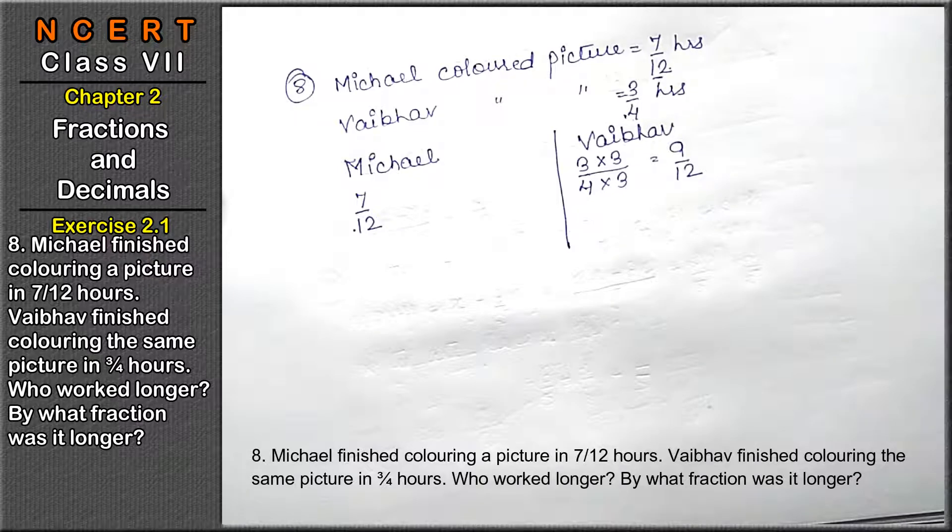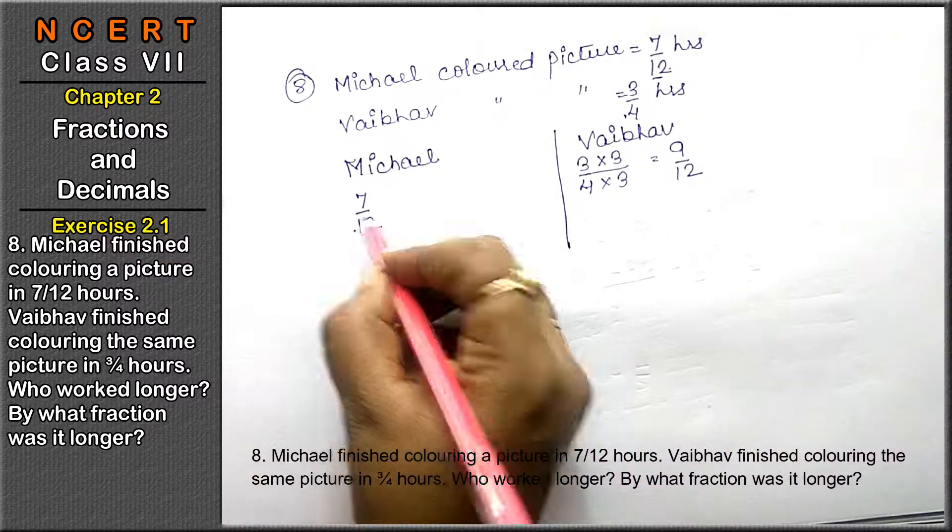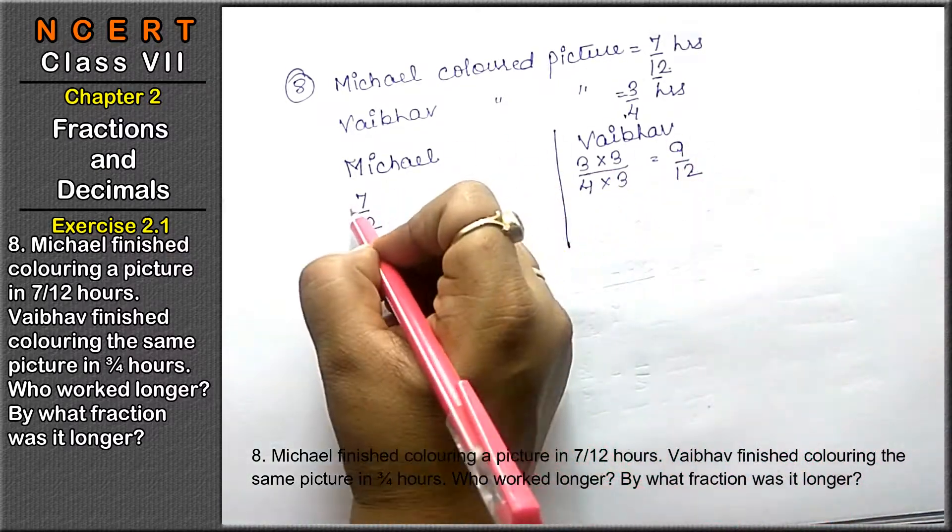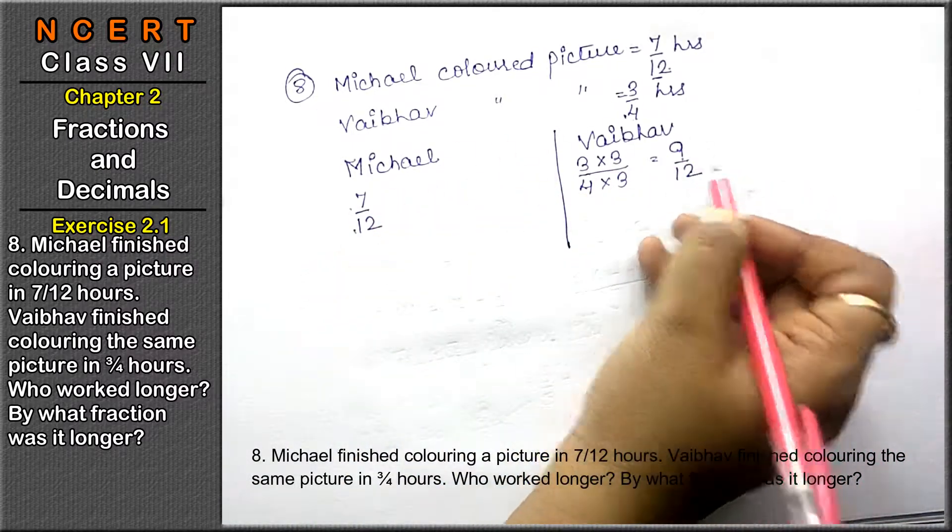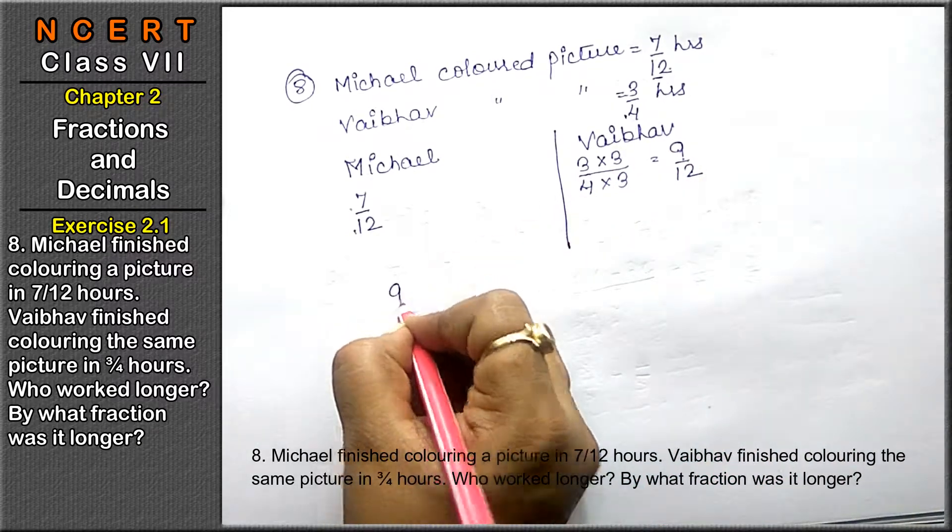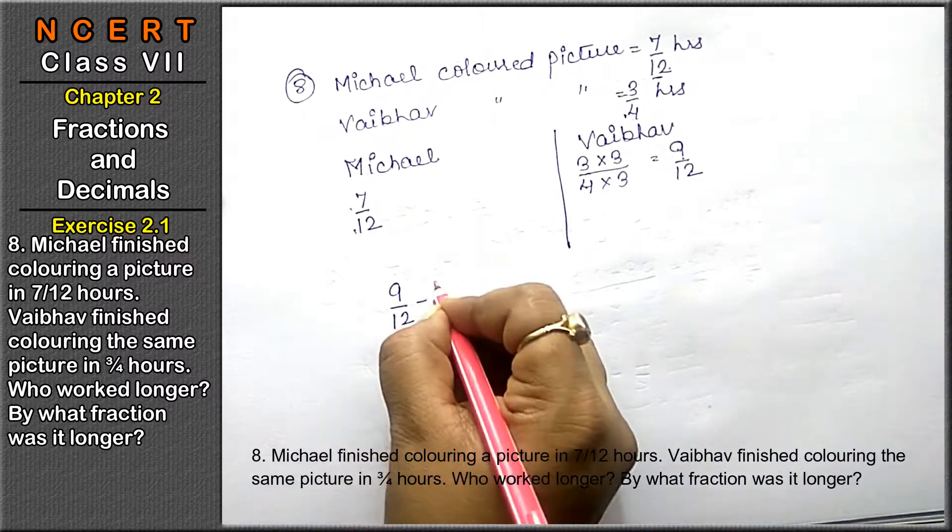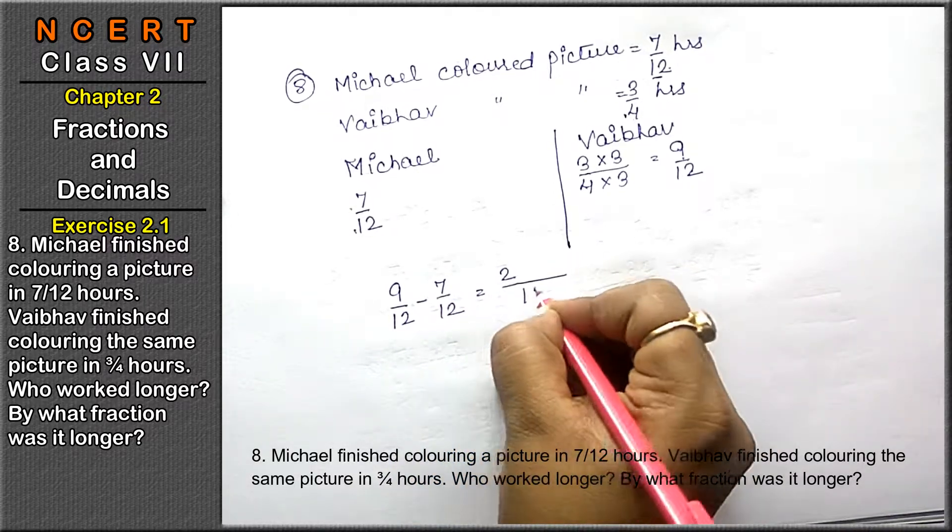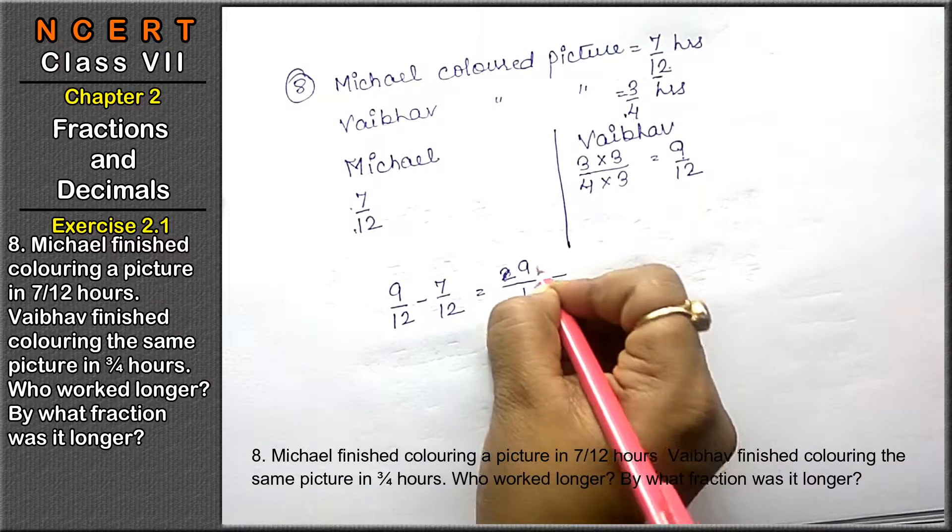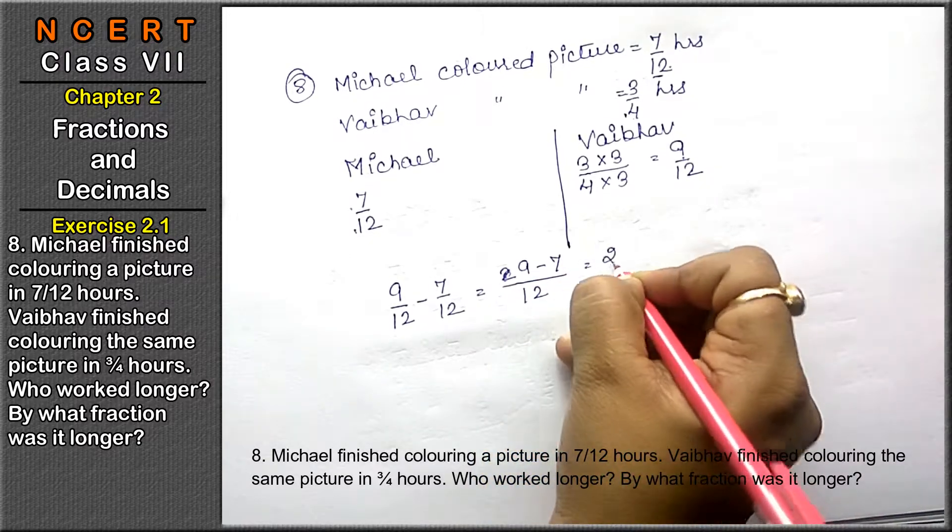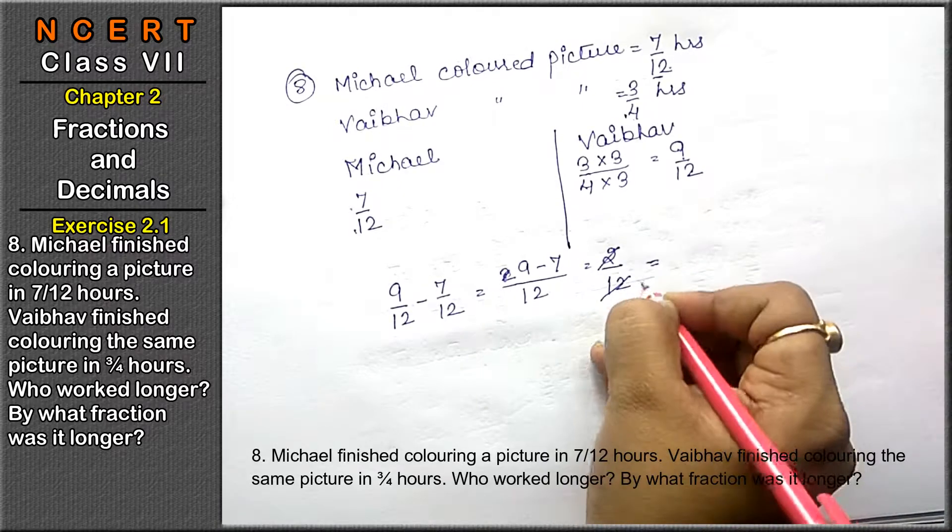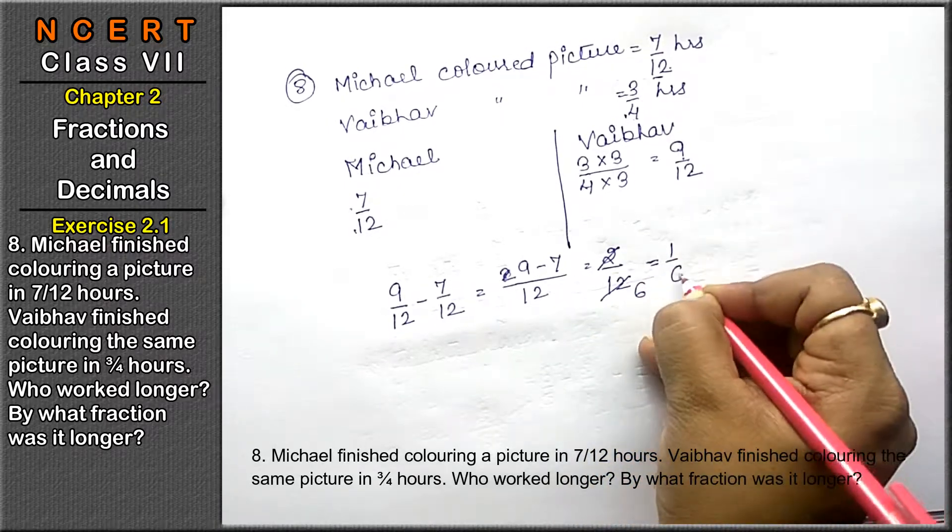By what fraction was it longer? The denominator 12 to 12 is the same. We will take Vaibhav's fraction minus Michael's. LCM is 12, 9 minus 7, that is 2 upon 12, which reduces to 1 upon 6. That is the answer.